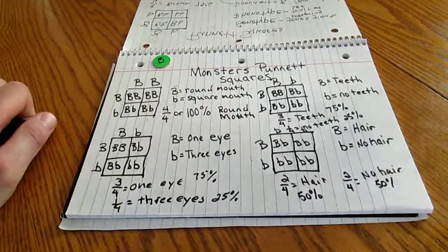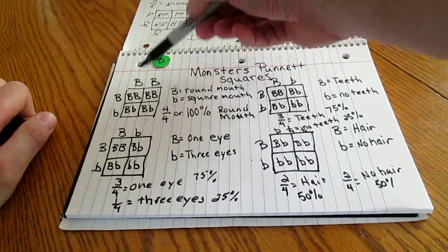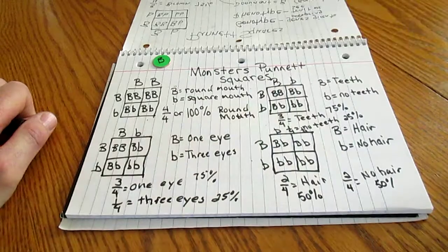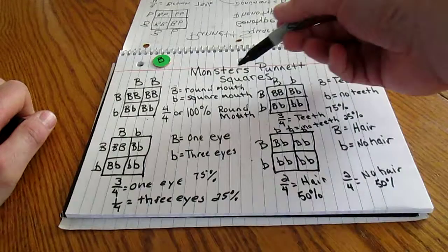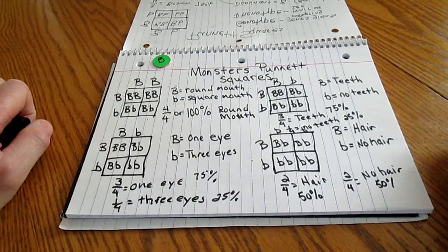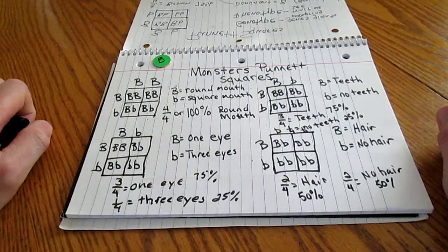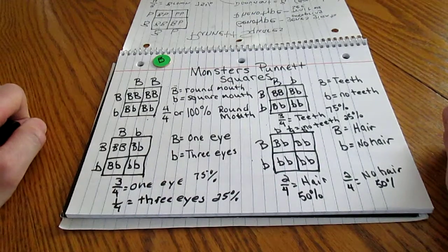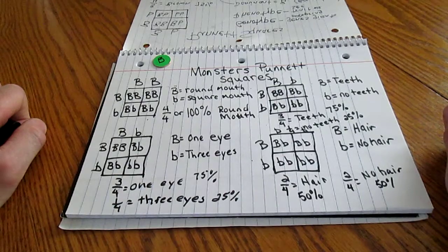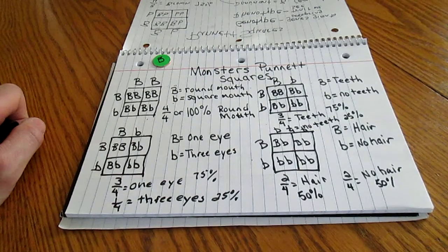So, now, in the Punnett square, these are our genotypes. The round mouth, square mouth, those things are our phenotypes. So, this is what we see. So, as you do this, if you don't finish in class, and you're doing this at home, and you can't remember exactly what you're supposed to do, go ahead and watch this YouTube video, and it should help walk you and your parents through the process. Thanks for listening, and good luck.